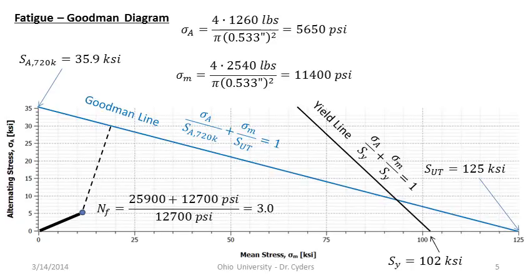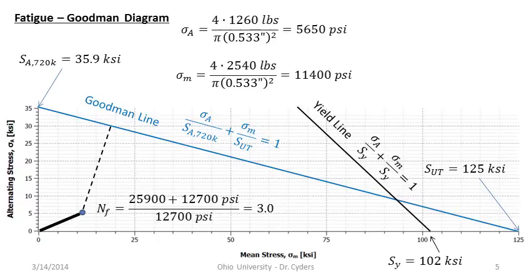Once you have your Goodman diagram and understand the correction factors — including C_size for bending or torsion — you can objectively look at the envelope and say: based on my desired factor of safety and the relationships at play, where do I want to be? Then you design a part to give you that operating point based on the loads. That's a much more powerful usage of this tool — backed by nothing more than algebra, understanding logarithms, and being able to read graphs. This tool is essential for real-world fatigue design problems.